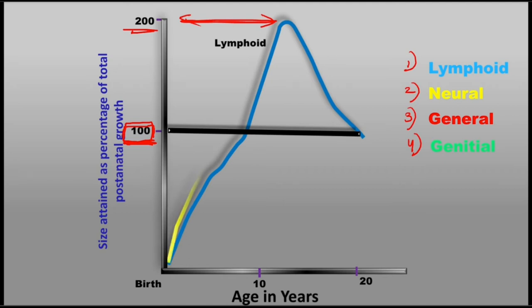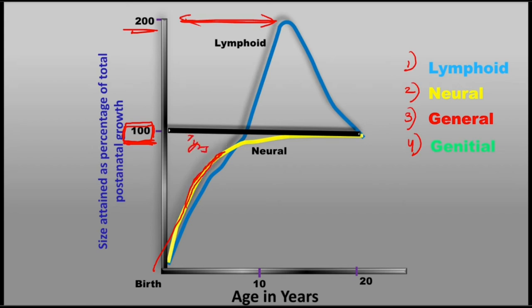The next type is neural tissue, which includes the growth of the brain, nervous system, and associated structures such as the eyes and parts of the skull. These tissues show very rapid growth in early postnatal life. Looking at the curve, it is very steep until about seven years of age, and then there is only a slow, steady gain after seven years.